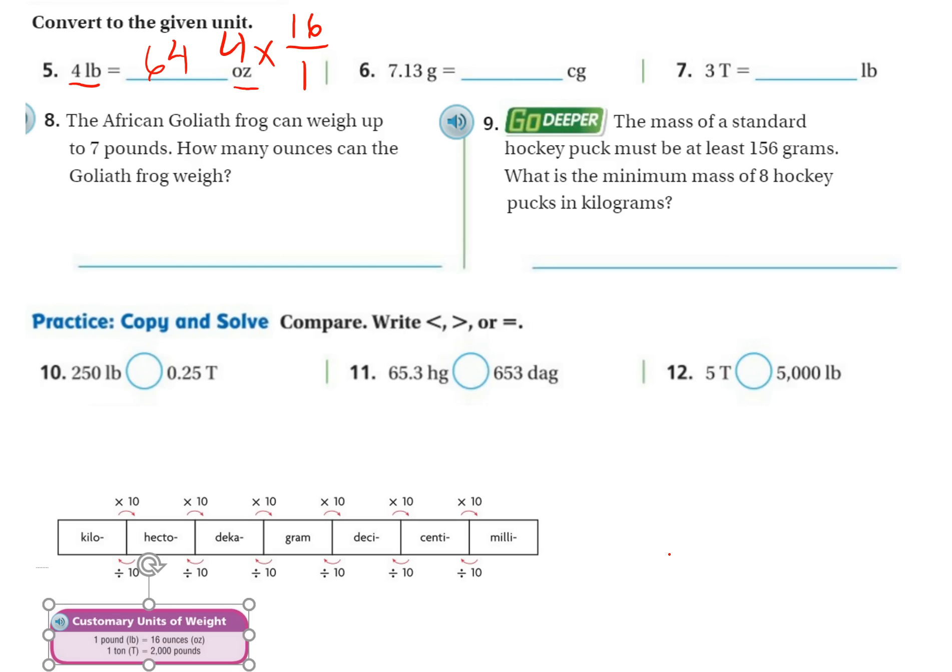Next we have grams to centigrams. Awesome, I get to use my chart. I have grams and I'm going back to centigrams, so I'm moving to the right one, two. So I take this number, 7.13, and I move my decimal two to the right, so it would be at the end of the number. I can hide it back there and just write 713. Done, nice and easy. Love these charts.